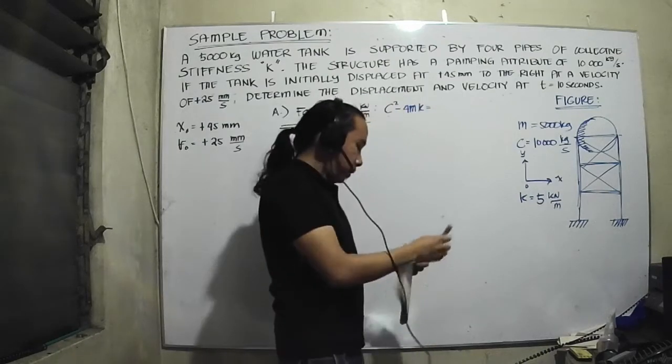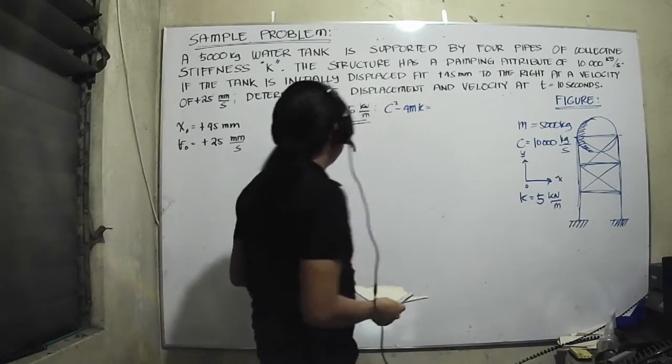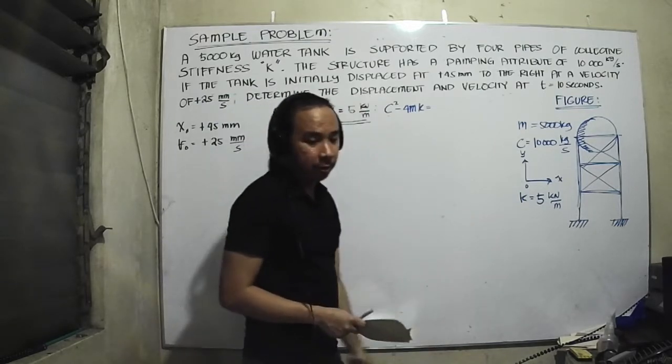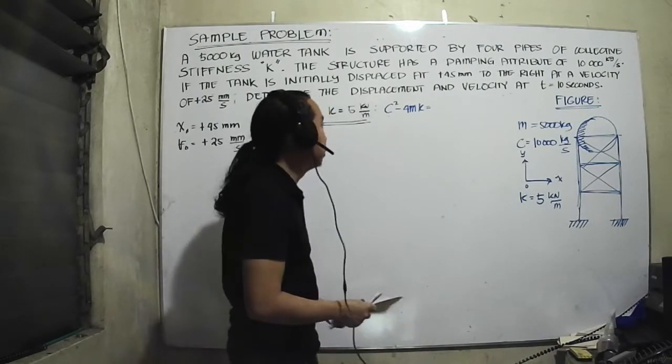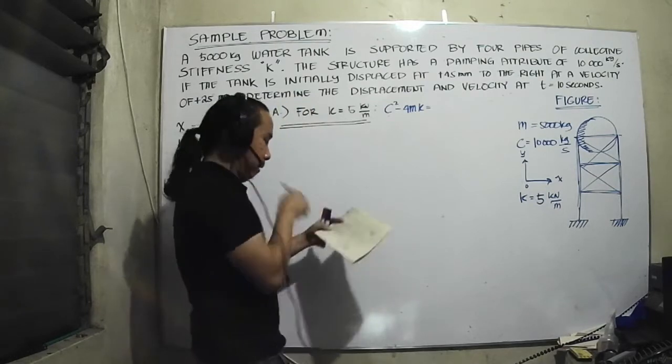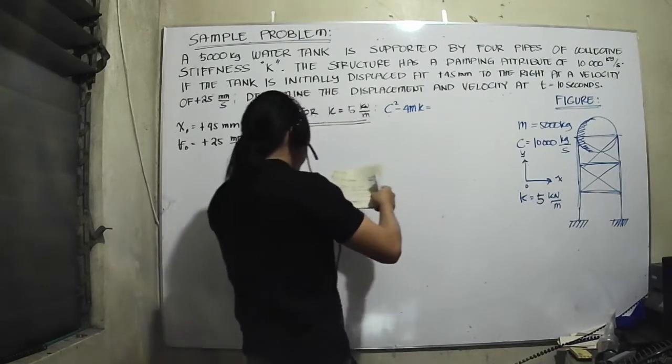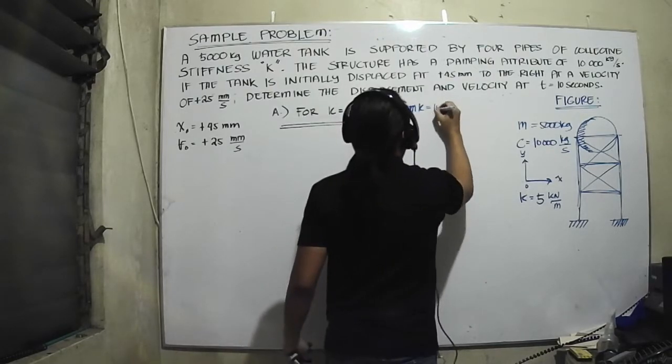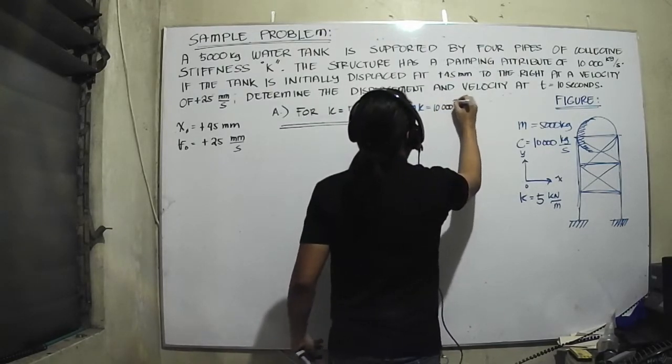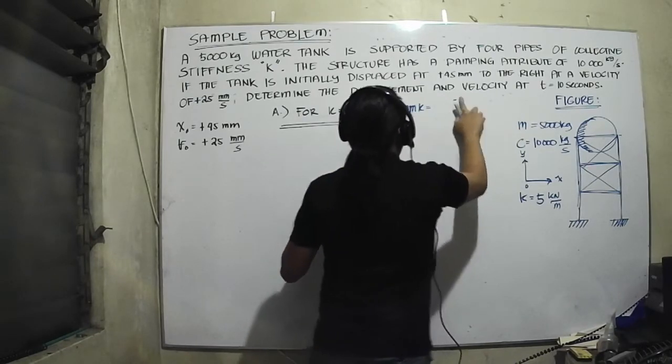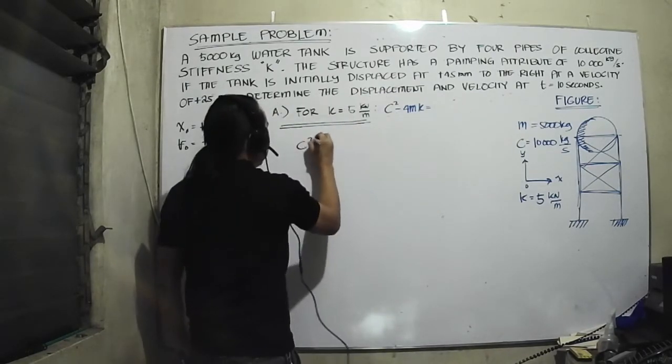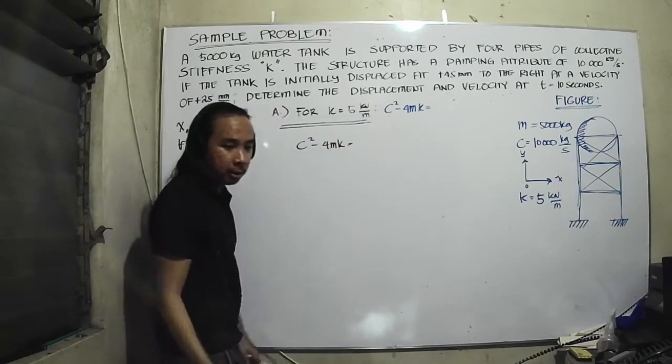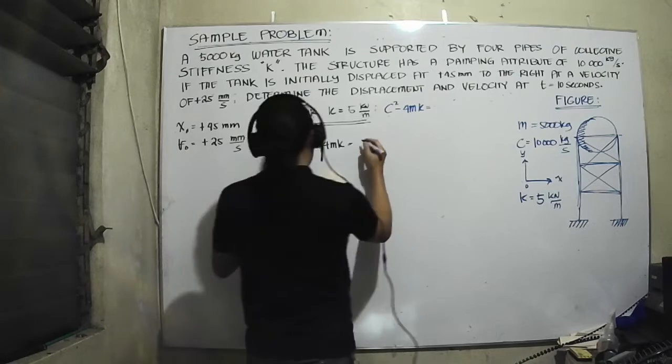Okay, so in this video let's try a different case. Let's say it's only 5 kN per meter. It's the same again, it's the process. You just need to double this 10,000 square.